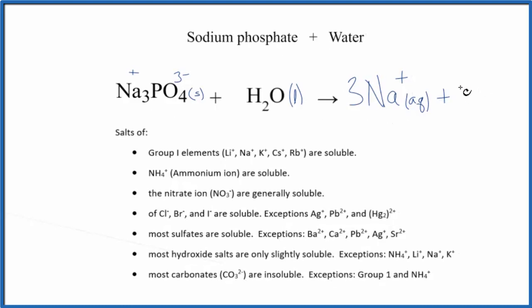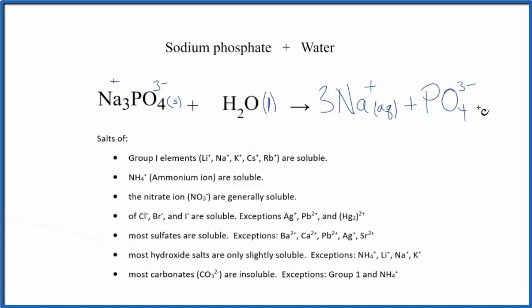Plus we have our phosphate ion. And that's also dissolved in water. So we write AQ. And this is the equation for Na3PO4 plus H2O.